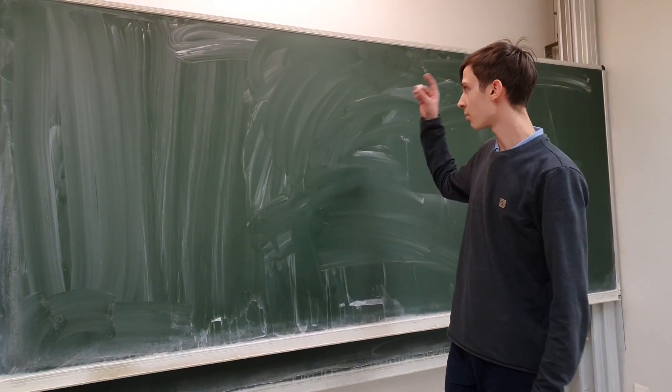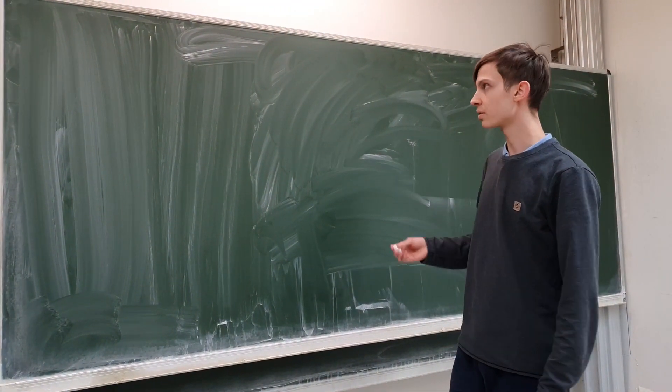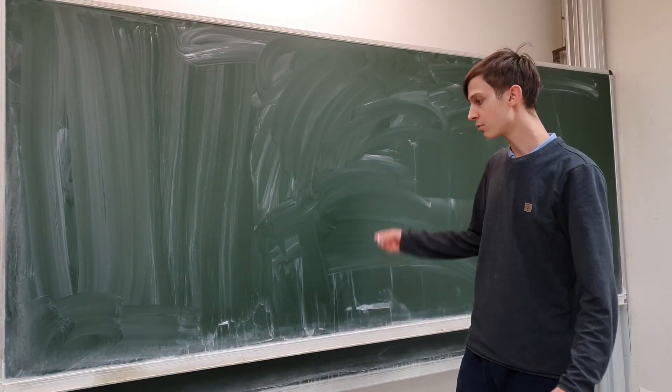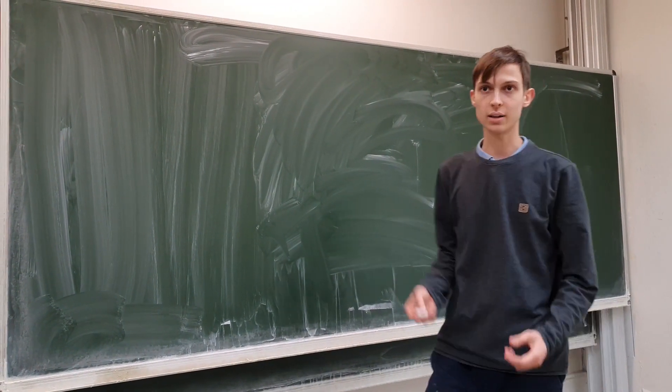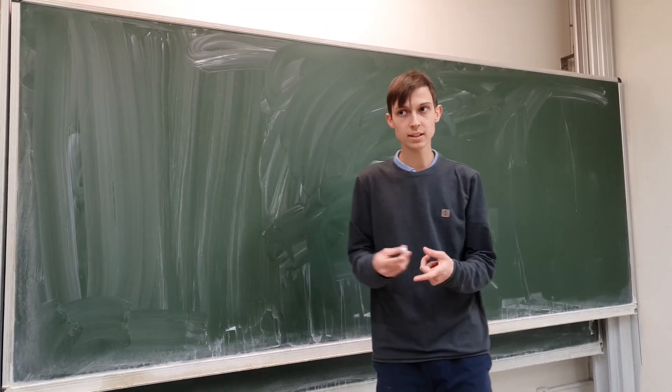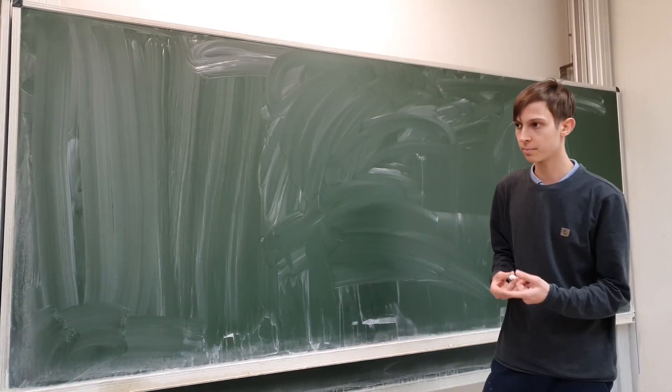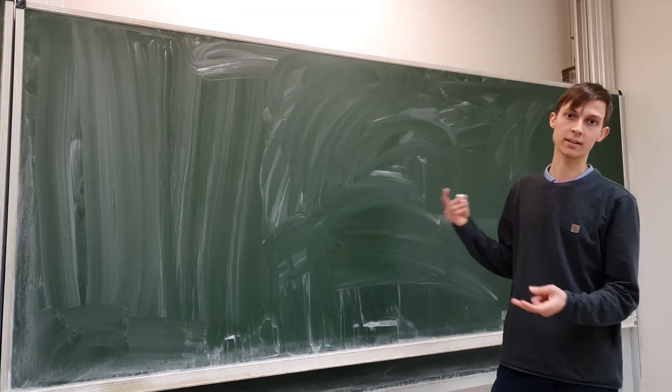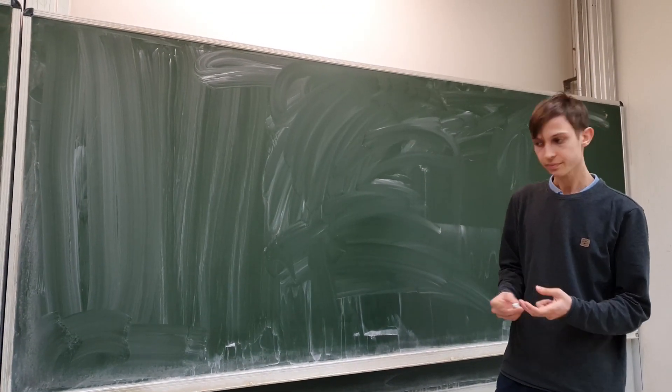Greetings! Today we're talking about the properties of groups. The basic three properties are as follows: associativity, inverse, and identity.